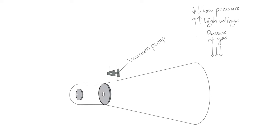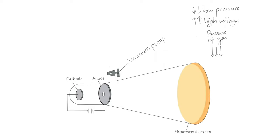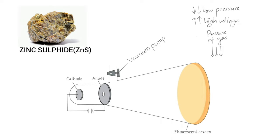Two thin pieces of metal are placed inside the tube. We call these thin pieces of metal electrodes. These electrodes are connected to a high voltage power source. The electrode connected to the negative terminal of the battery is called cathode, and the electrode connected to the positive terminal is called anode. A hole is made in the anode. This side of the tube is coated with a fluorescent or phosphorescent material like zinc sulfide, because this material glows when hit by the rays.